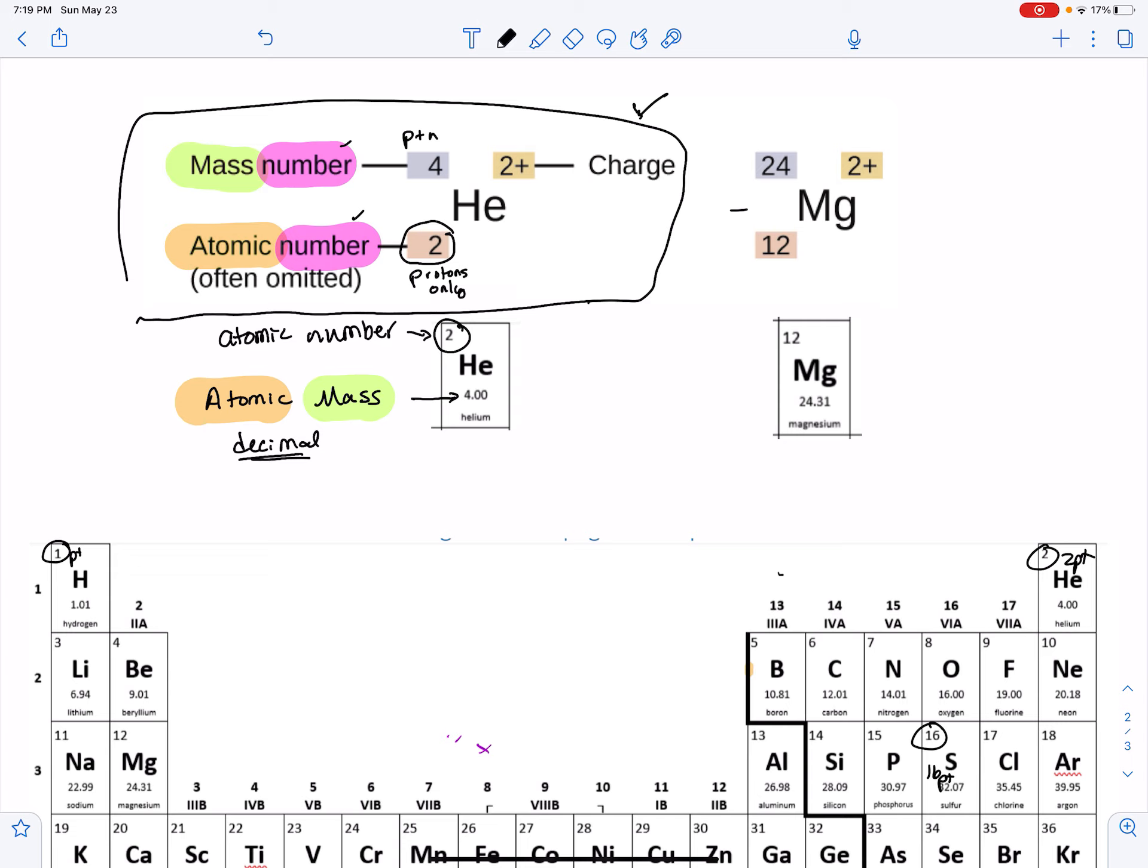To not get all confused on top, bottom, left, right, what I would say is when you look at the periodic chart, the number that doesn't have a decimal, that's the number of protons. It's because you can't have half a proton or a fourth of a proton, you either have a proton or you don't. So it's always going to be a whole number.